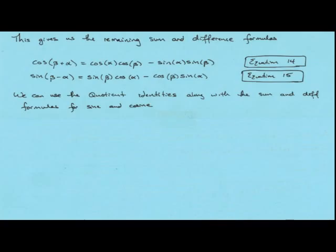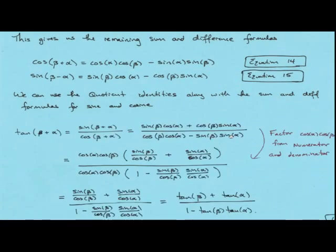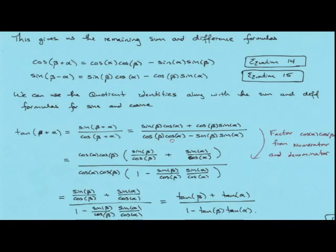For the sum and difference formulas for tangent, we use the formulas we derived along with the quotient identity. We look at the tangent of beta plus alpha as sine of beta plus alpha over cosine of beta plus alpha. We then expand using our formulas: the numerator becomes sine of beta cosine of alpha plus cosine of beta sine of alpha, and the denominator becomes cosine of beta cosine of alpha minus sine of beta sine of alpha.